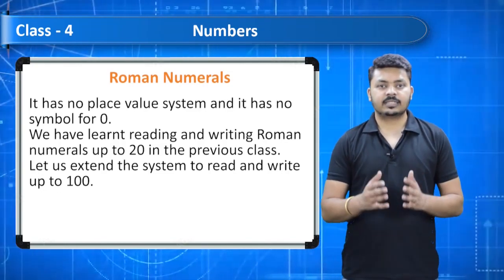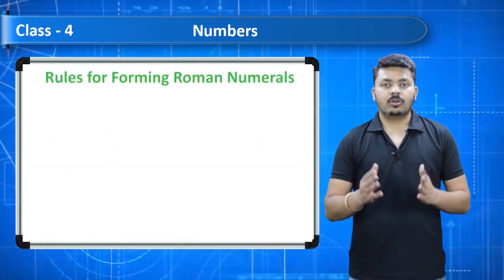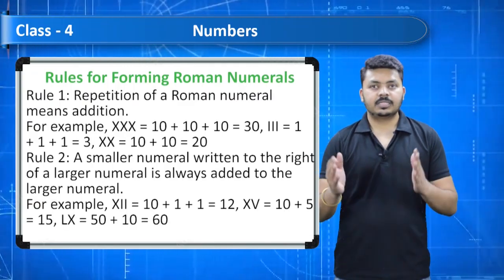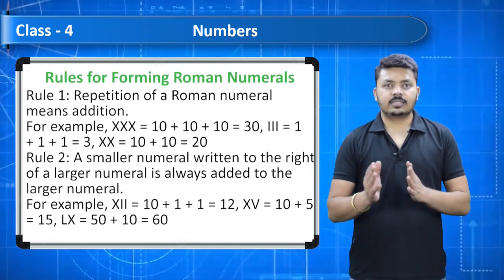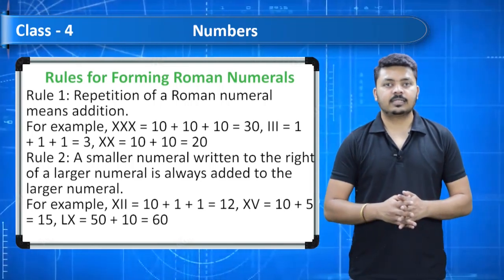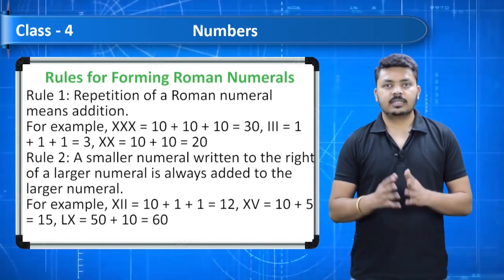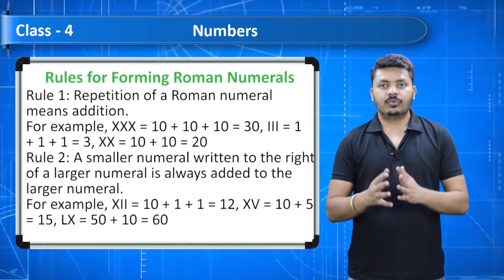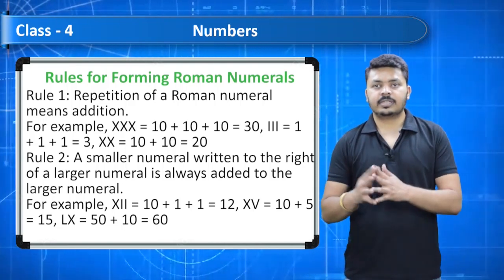Rules for forming Roman numerals. Rule 1: repetition of a Roman numeral means addition. For example, XXX = 10 + 10 + 10 = 30. III = 1 + 1 + 1 = 3. XX = 10 + 10 = 20.